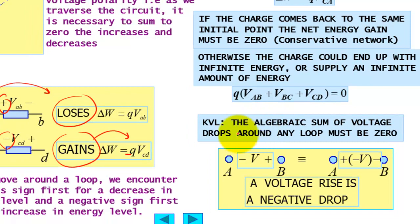The algebraic sum of the voltage drops around any loop is zero. So this is KVL, this is KVL, it should be zero.